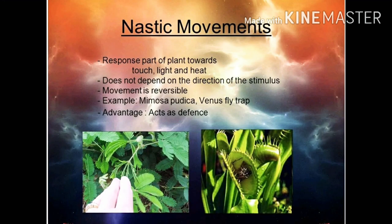Nastic movements are induced by various external stimuli. For example, if the growth-independent movement in a plant is in response to touch, then that type of movement is called thigmonastic movement. If the growth-independent movement is due to a change in light, then that type of movement is called photonastic movement.